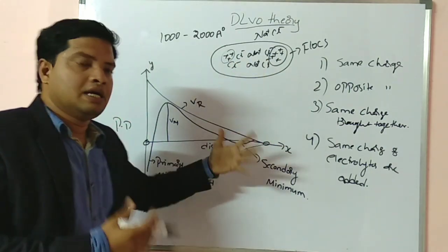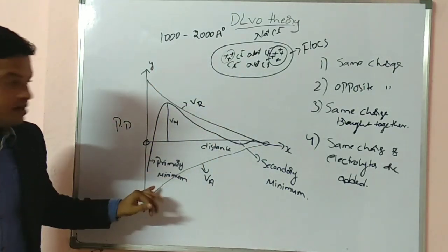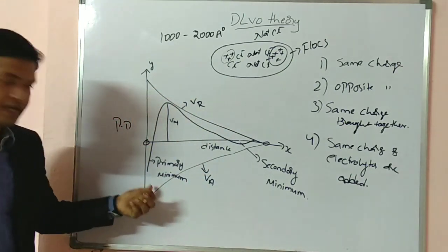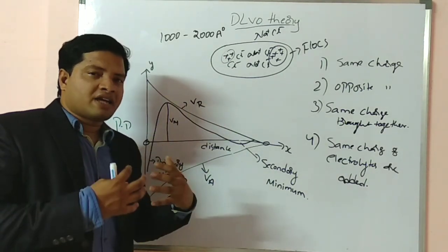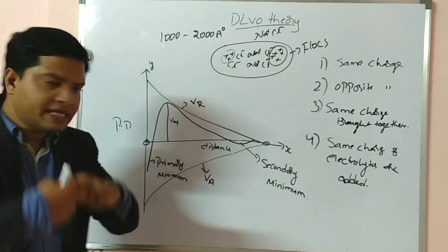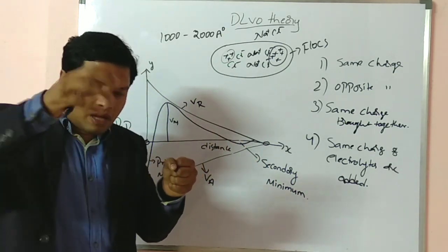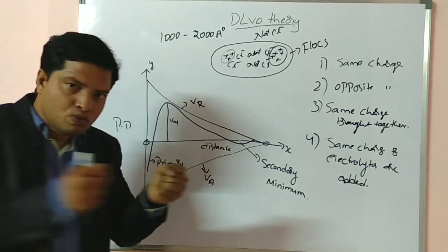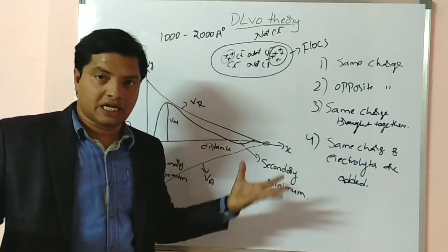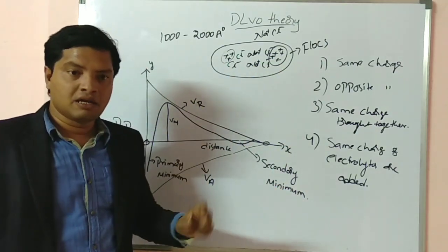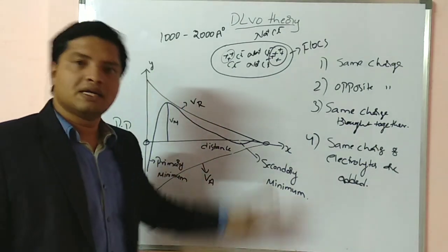This procedure we call flocculation. The difference between primary minimum and secondary minimum is that in primary minimum, due to overlapping of orbitals, the attraction increases so much you cannot separate those particles — they form hard cake. But in secondary minimum, the particles come close, electrolytes arrange around them, and they try to move together as flocs. When you shake vigorously, the floccules break and act as individual particles, but after some time they come back together again.